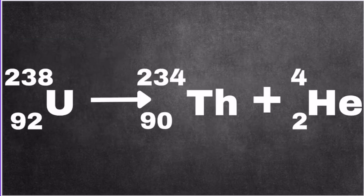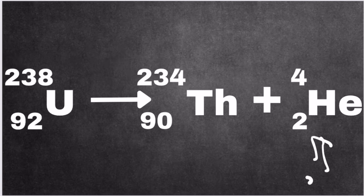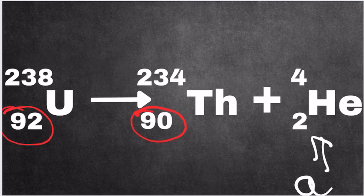So here's an equation. Uranium-238 becomes thorium-234 plus helium, which is of course our alpha particle. Now if you notice, thorium is two elements behind uranium because its atomic number is 92 minus 2.